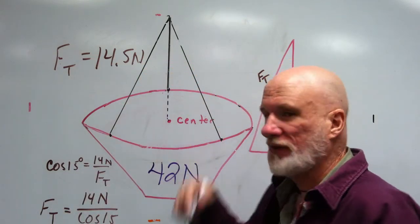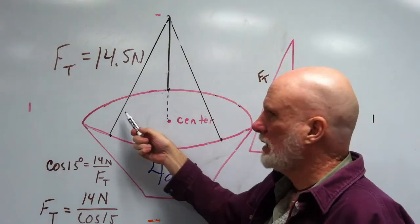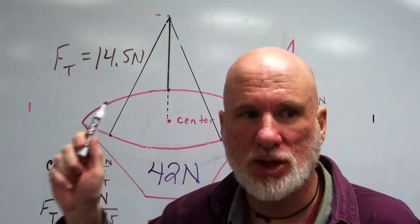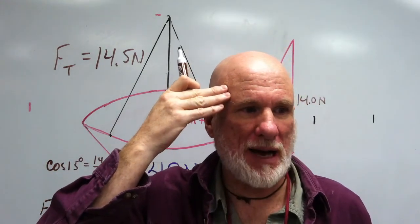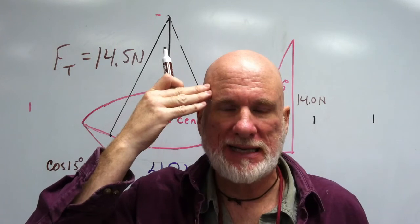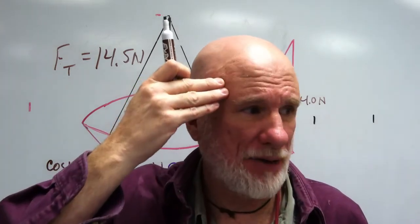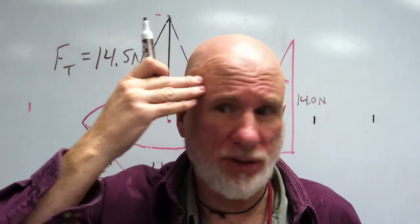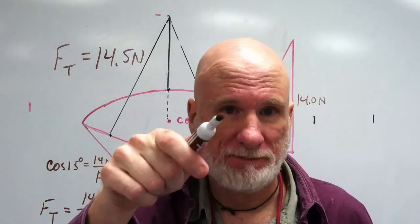So, 14.5 will be the tension in each one of the three strings. It's interesting that the flower pot is 42 newtons, yet the total force being held up is 43.5 newtons. Got it?